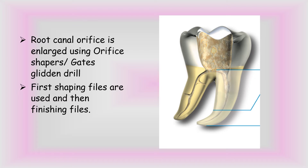The root canal orifice is enlarged using orifice shapers and Gates-Glidden drills — in this case, SX. Then we use the files in order: first the shaping files, then the finishing files. The shaping files prepare the coronal two-thirds of the root canal. The finishing files prepare the apical one-third, but they also continue enlarging the coronal two-thirds simultaneously. This way we get a very smooth and tapered funnel.